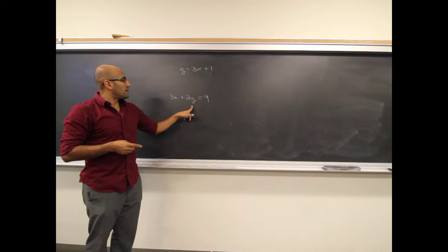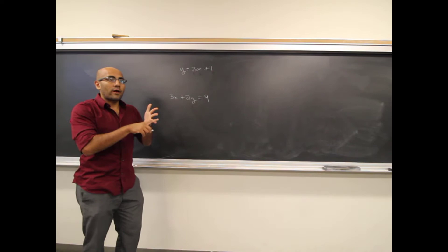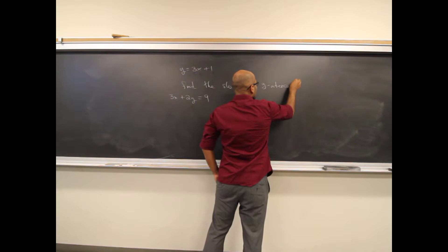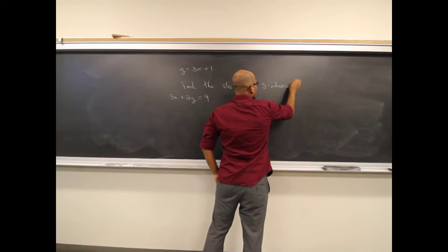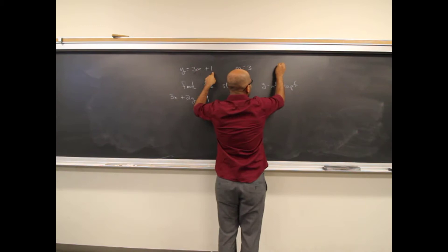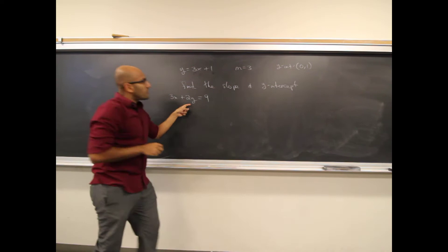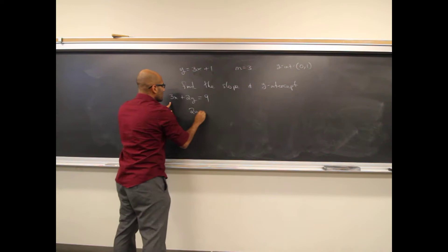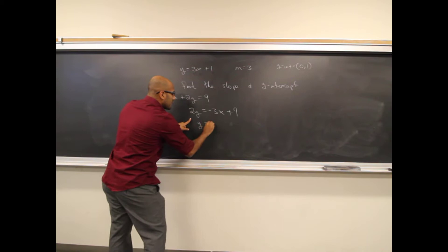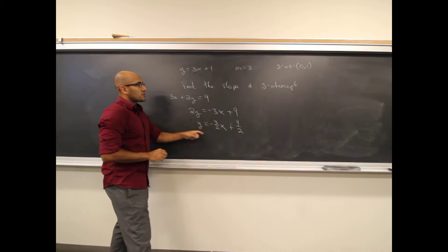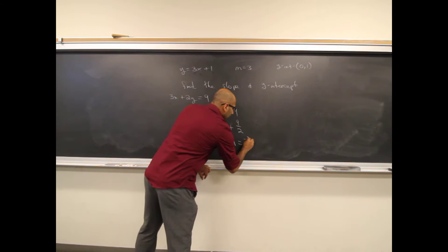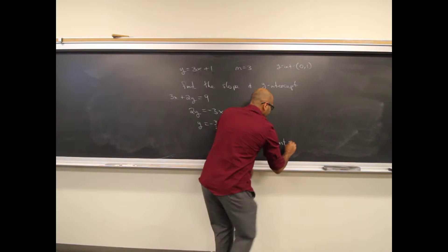If we wanted to solve for y to find the slope and y-intercept, we'd move the 3x over, getting 2y equals negative 3x plus 9. Dividing everybody by 2, we get y equals negative 3 over 2 x plus 9 over 2. So the slope m is equal to negative 3 over 2, and the y-intercept is (0, 9/2), or 4.5.